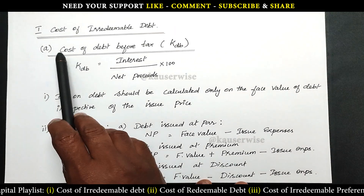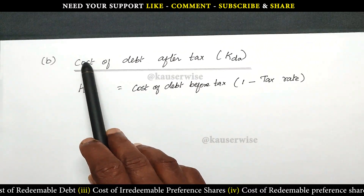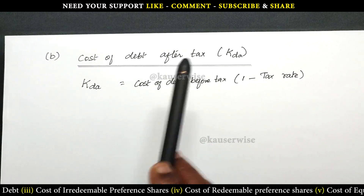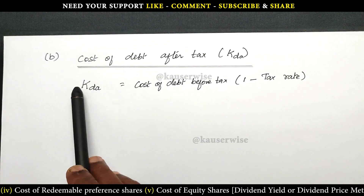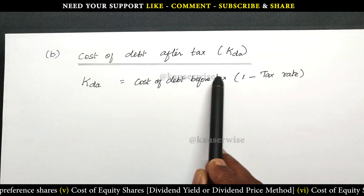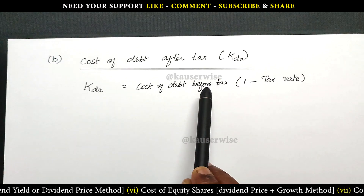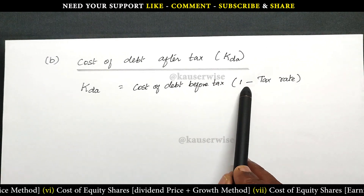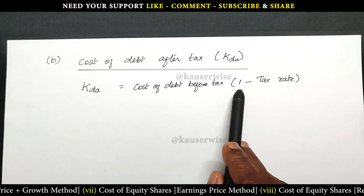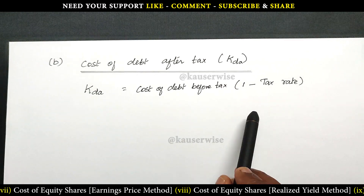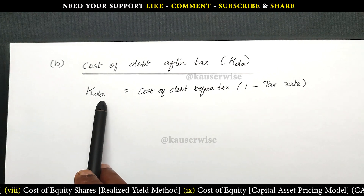Now we are going to see the second formula — cost of debt after tax. KDA equals cost of debt before tax multiplied by 1 minus tax rate. Just apply the previous formula to find the cost of debt before tax, then multiply by 1 minus the tax rate. Suppose the tax rate is 50 percent — 1 minus 0.5 equals 0.5. Just multiply that value with cost of debt before tax and you will get the cost of debt after tax.